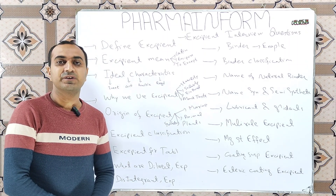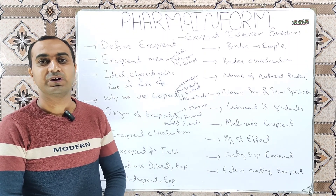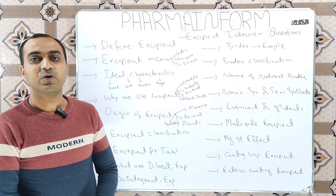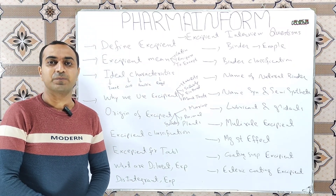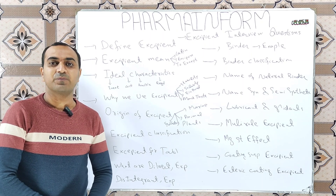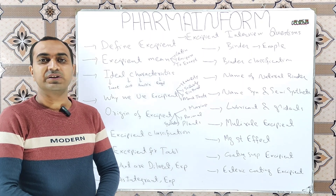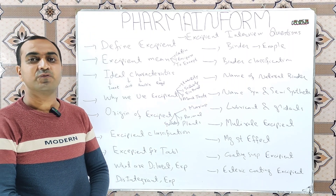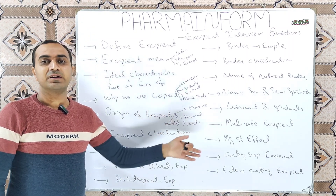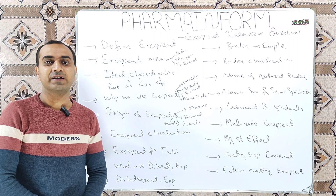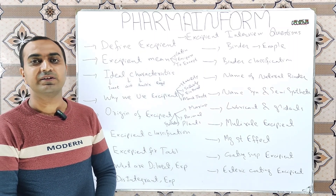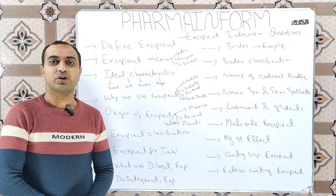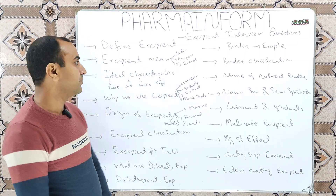The next question is: what are disintegrants? Disintegrants are excipients which are added in solid dosage forms to break down the tablet into small fragments, which are then broken down further to release the API. The link for more information is in the description. The conventional disintegrant is starch, while super disintegrants include sodium starch glycolate and croscarmellose sodium.